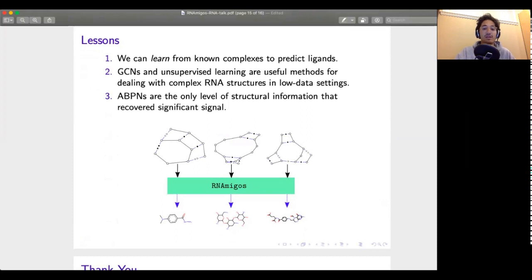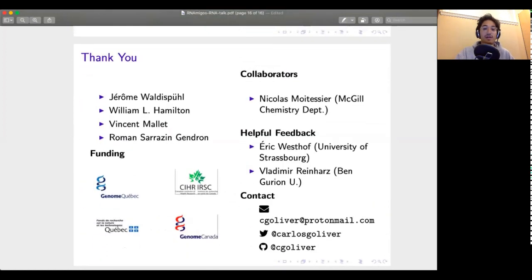Just to summarize the lessons that we take out of this is that we can learn from complexes to predict ligands. So we propose the first fully learning based approach to do this and we find that graph convolution networks and unsupervised learning techniques can really boost performance and help us deal with complex RNA structures. Finally we find that augmented base pairing networks that take into account these additional geometries are the only level of structural information that was sufficient for having reliable predictions of ligand binding. With that I just want to thank all my lab members, co-supervisors and funding agencies. Please feel free to contact me with any questions, thank you.